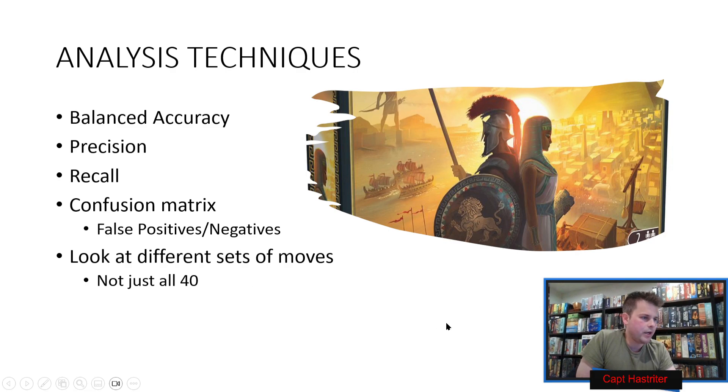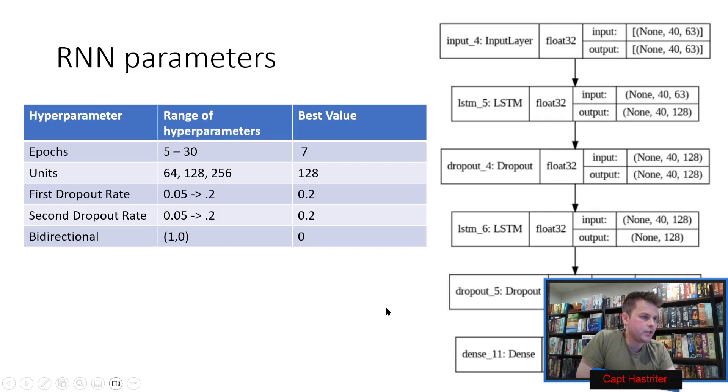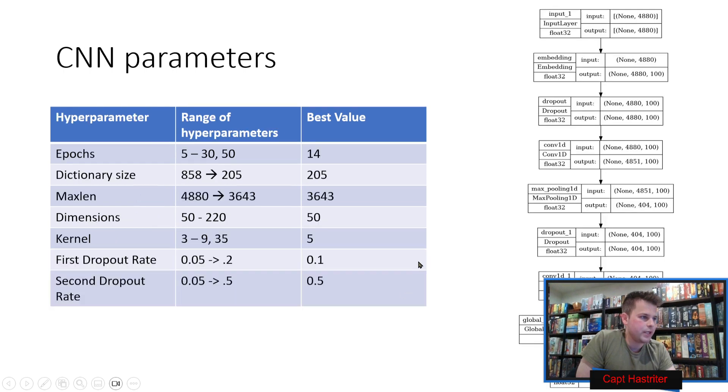Here's our analysis techniques as we go through the 2,000 games. In the 1,000 games, selecting our hyperparameters, here's what we ended up deciding to use. Same thing with the CNN.